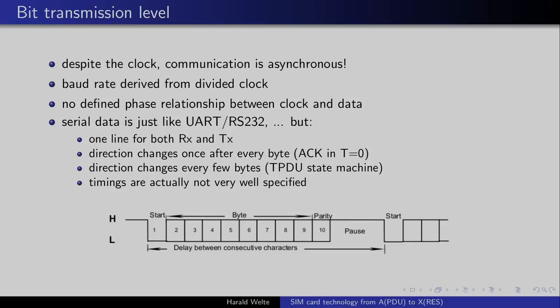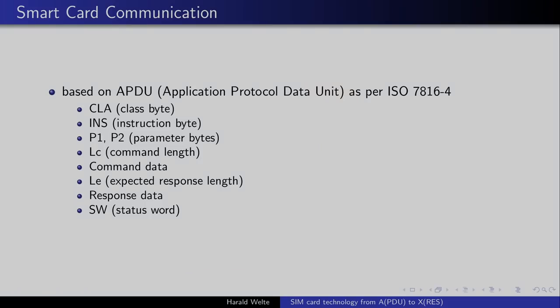After powering up the card, at the bit transmission level it's actually very much like a normal UART — if you've looked at RS-232, it's rather simple: start byte, stop byte, parity, serial bit transmission. What's a bit interesting is that we have a clock and the baud rate is divided from that clock, but it's still an asynchronous transmission — there's no phase relationship between the clock signal and the baud rate. Lots of people get this wrong, particularly authors of Atmel microcontroller datasheets which claim it's synchronous communication, which it is not.